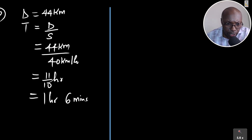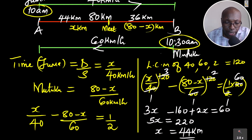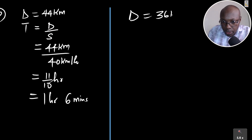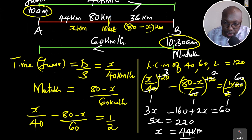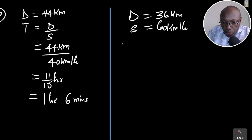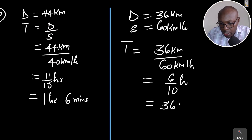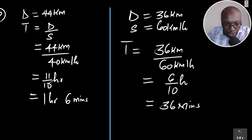We can verify from the other side. From B, Mutuko traveled 36 kilometers at 60 kilometers per hour. Time taken equals 36 divided by 60, which simplifies to 36 minutes. So from A, the time taken is 1 hour 6 minutes, and from B it is 36 minutes.